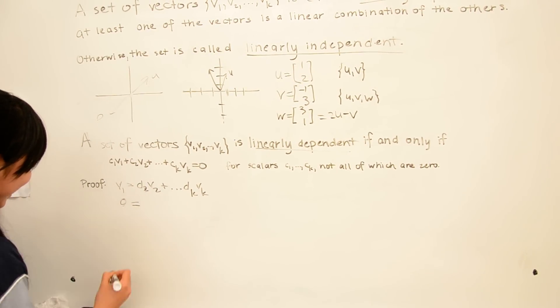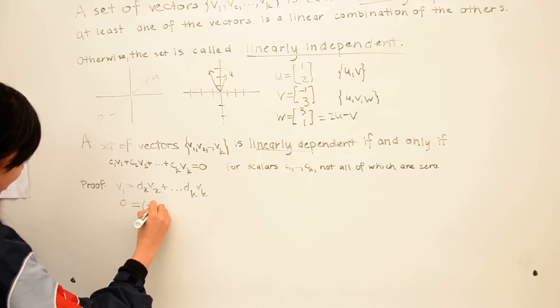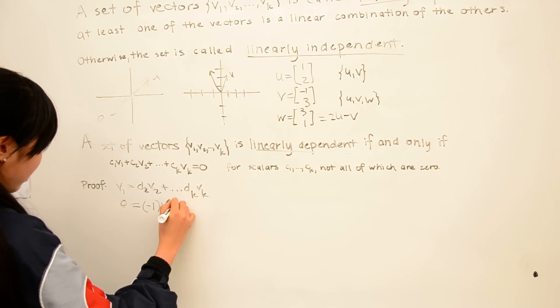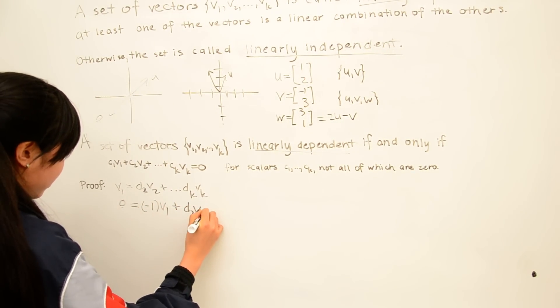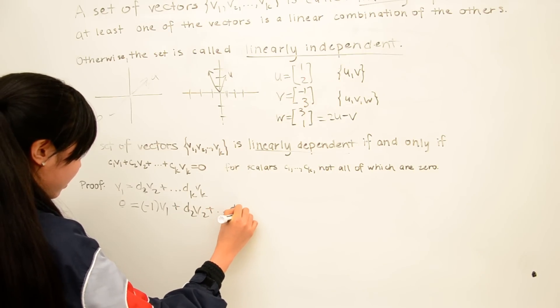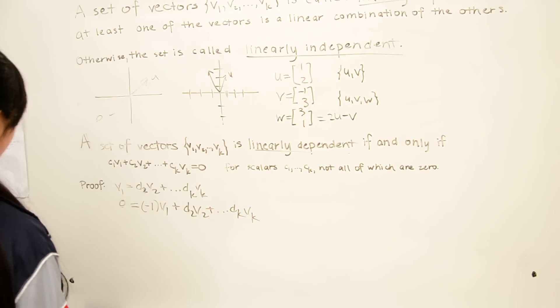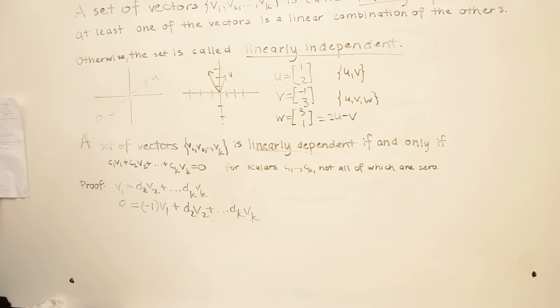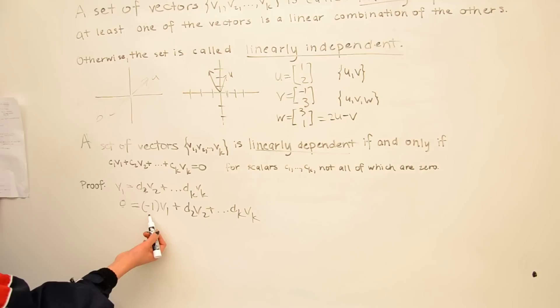0 equals negative v1, which you can also write as -1 times v1, plus d2v2 all the way through dkvk. And so this equation is a form of this condition, where scalars c1v1 through ckvk sum up to 0, and not all of them are 0, because here we have a -1. This satisfies the proof in this direction.